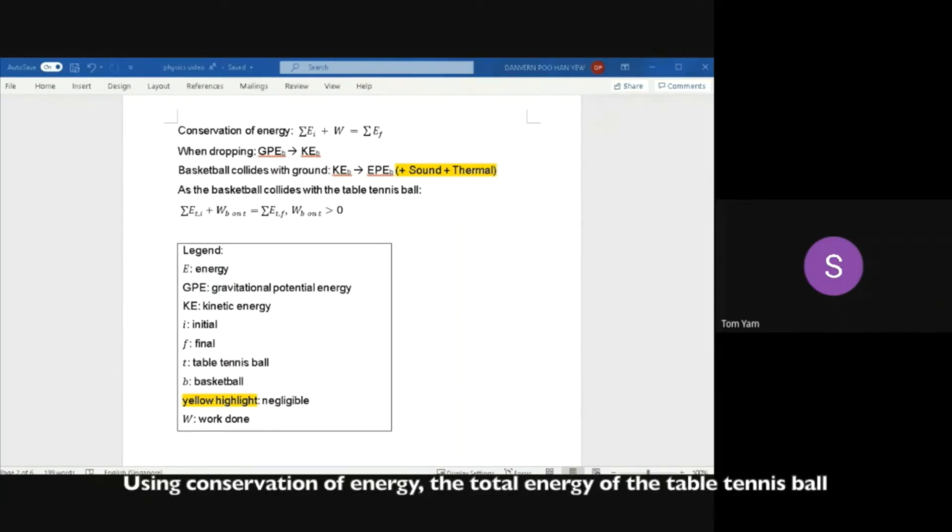Using conservation of energy, the total energy of the table tennis ball after collision is more than the total energy of the table tennis ball before collision, thus causing the table tennis ball to have a higher rebound velocity, reaching a greater height. All these energy conversions are illustrated as shown.